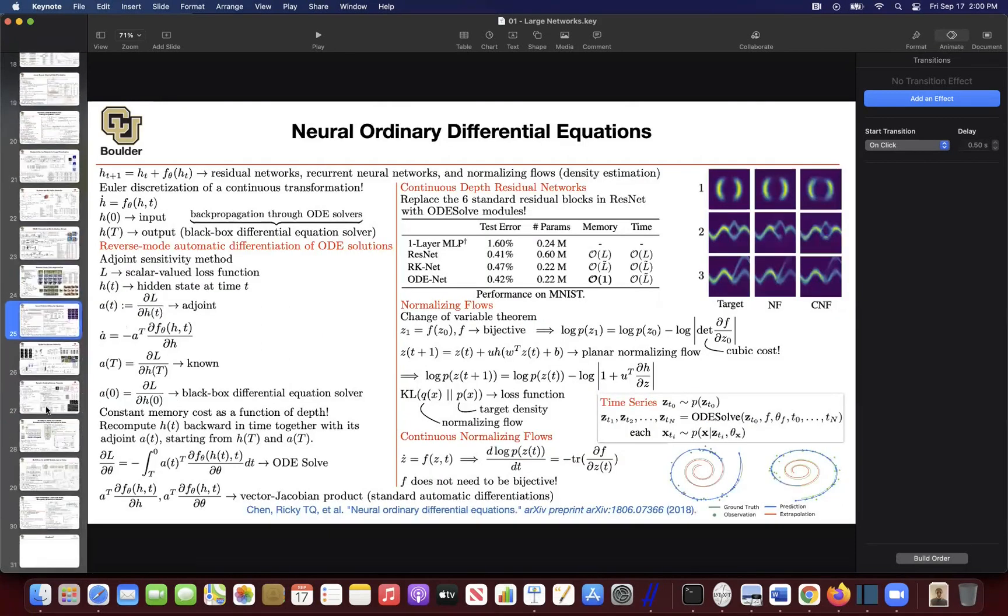We said, you're trying to go beyond convolutions, let's continue with that trend. Let's try to go beyond residual connections or even beyond the concept of having discrete layers. What if you have a continuous depth for your neural network? For some applications, it's actually really useful.